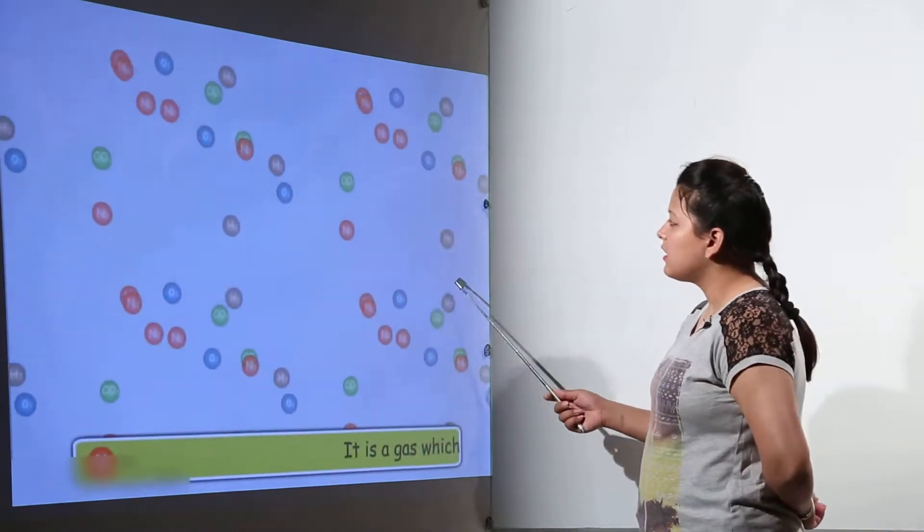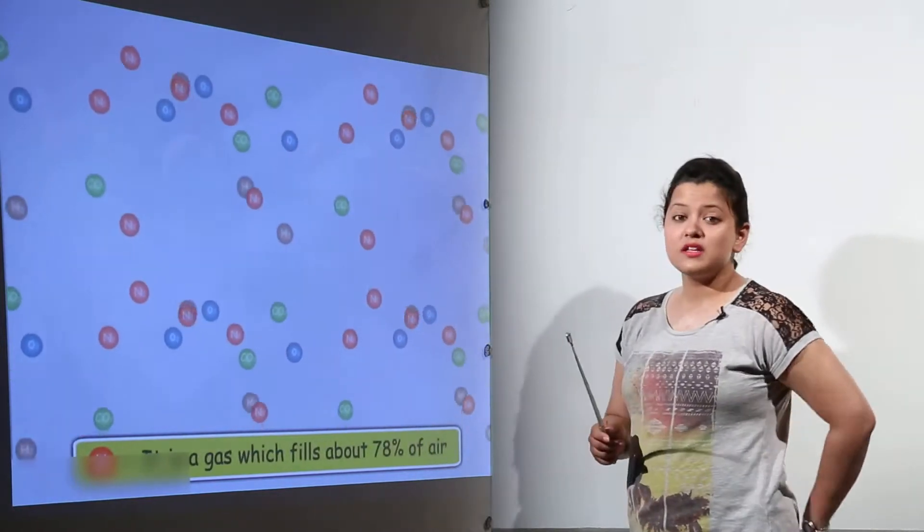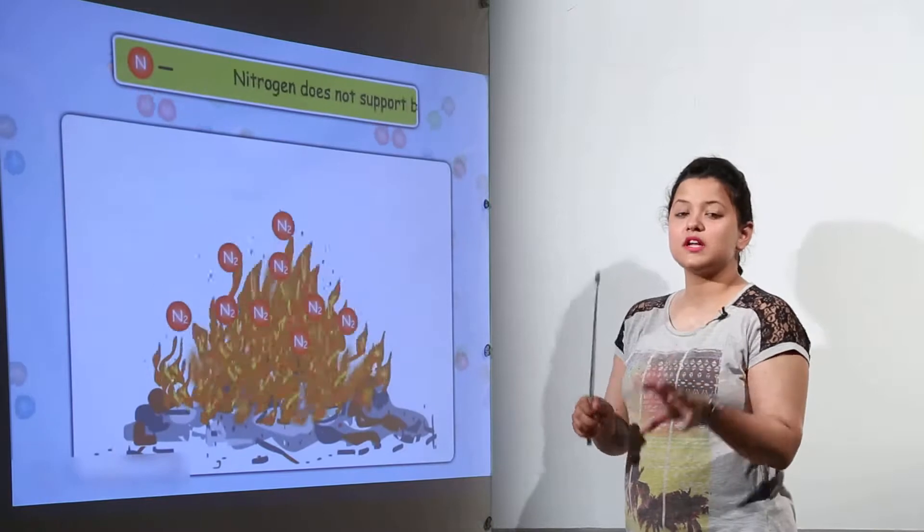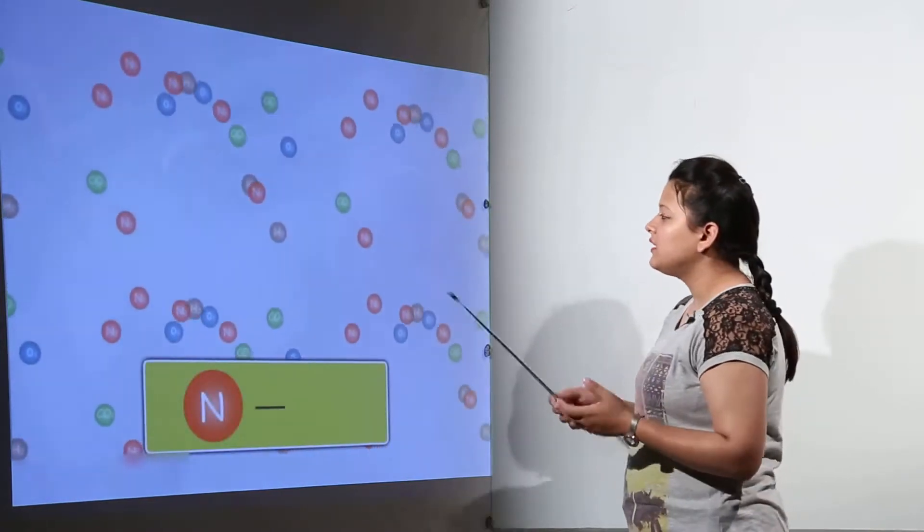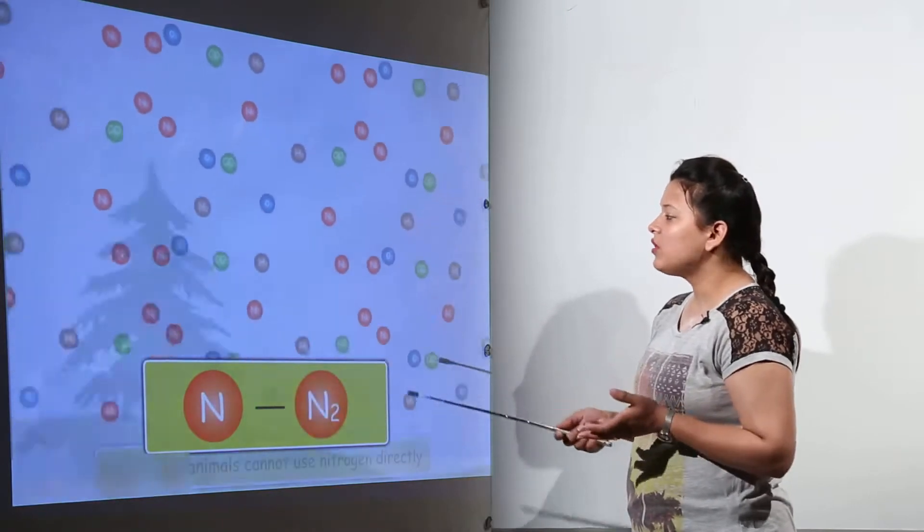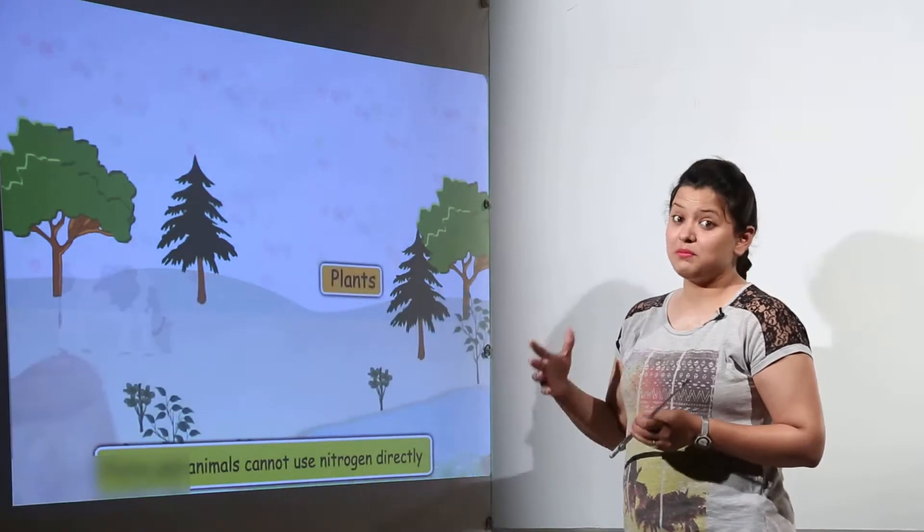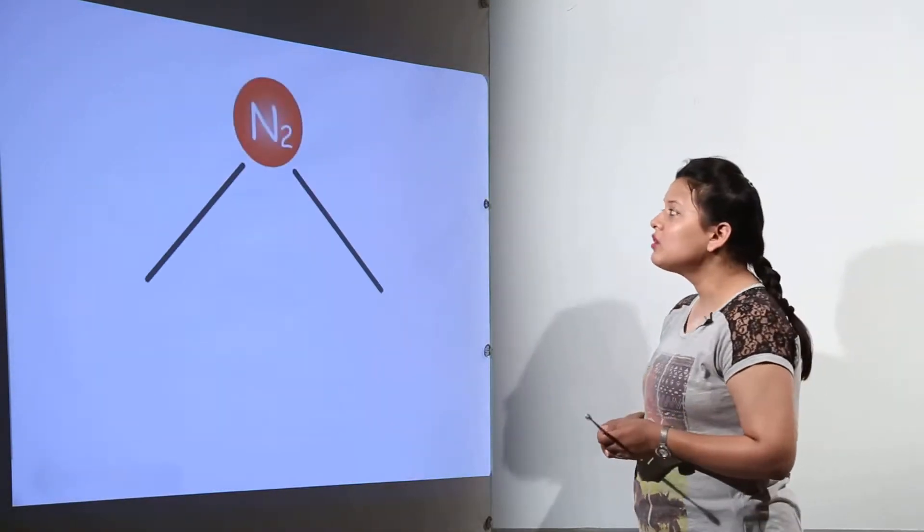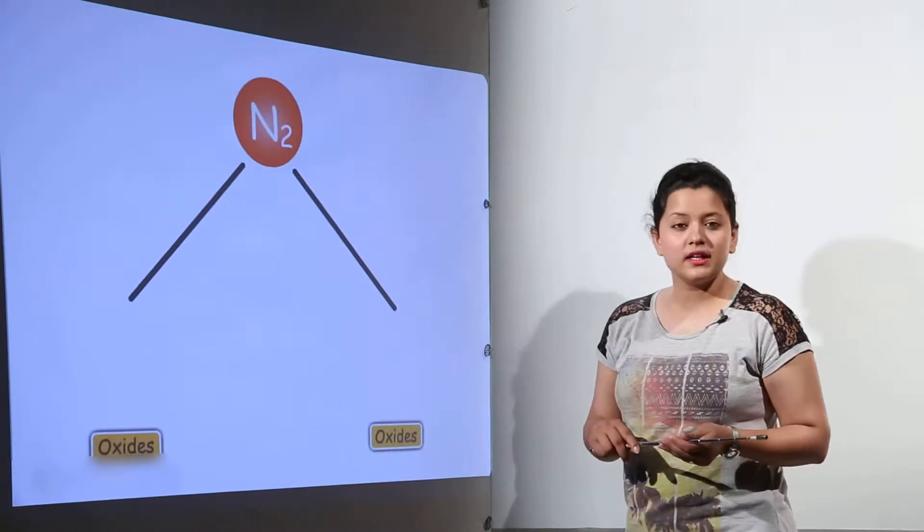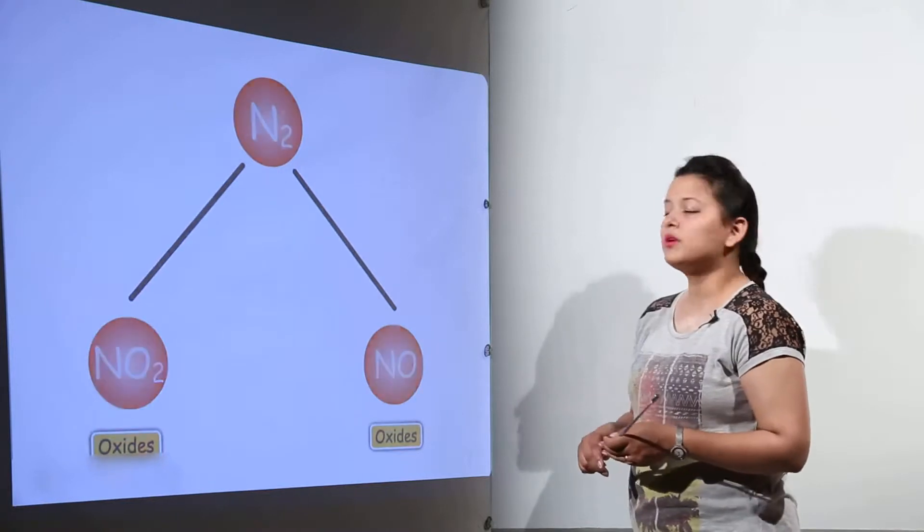Nitrogen is a gas that comprises approximately 78% of air. It does not support burning and is always present in some other form. Despite being in such quantity, it cannot be consumed or used by plants and animals directly. It is present in two types of oxides: NO2 and NO.